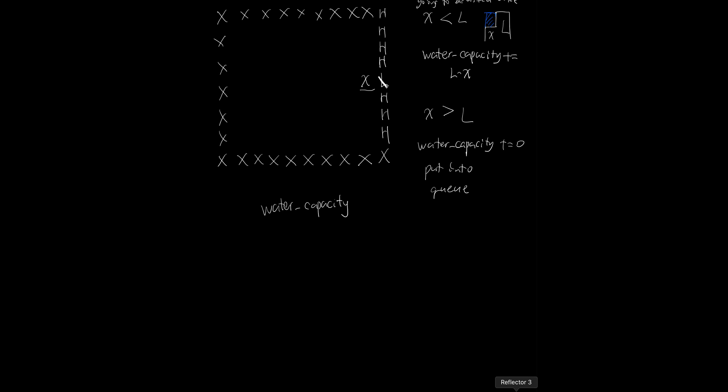Now let's look at X's neighbors A, B, and C. If all of them are higher than L, then the importance of L is gone. But how do I know L's height from X? I need to pass down that information somehow. When searching X's neighbors, I have to know the information of L without losing it. So I need to keep what I'll call the 'water blocking height' info.